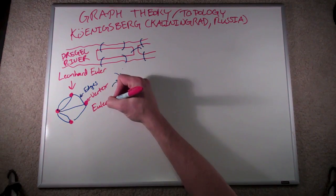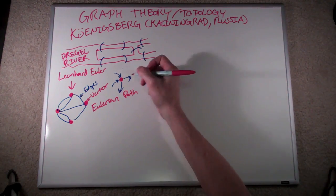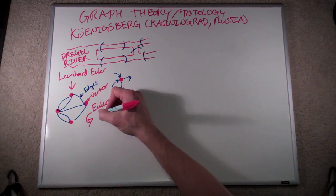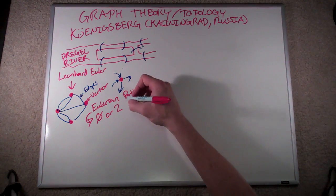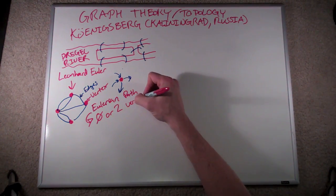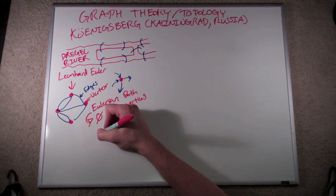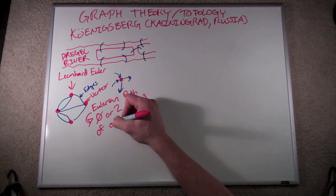He then formalized the problem into what's called an Eulerian path. What he realized was, if you have a diagram like this called a graph, the only way you could visit each edge only once was if there were either zero or two vertices that had a degree that was an odd number.